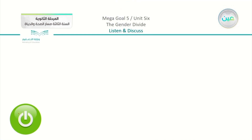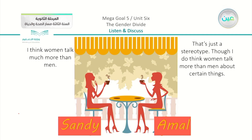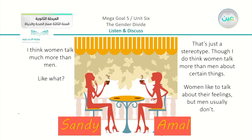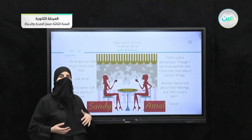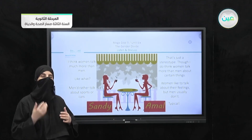We are going to start our lesson with a short conversation between Sandy and Amal. Sandy says: 'I think women talk much more than men.' Amal replies: 'That's just a stereotype, though I do think women talk more than men about certain things.' Sandy asks: 'Like what?' Amal says: 'Women like to talk about their feelings, but men usually don't. Men rather talk about sports or cars.' Sandy says: 'Typical.' This conversation shows a difference between the two genders.